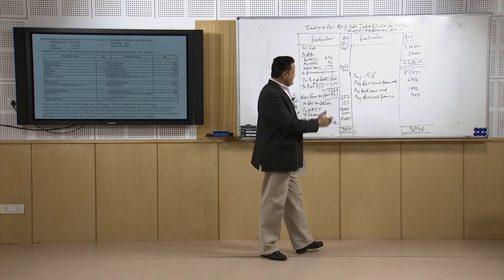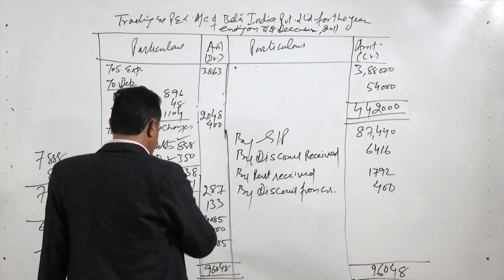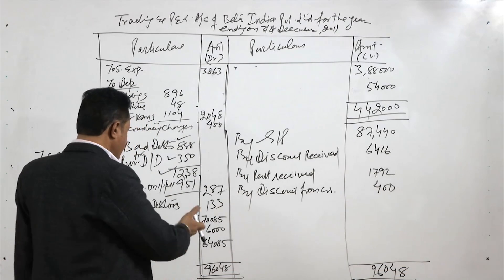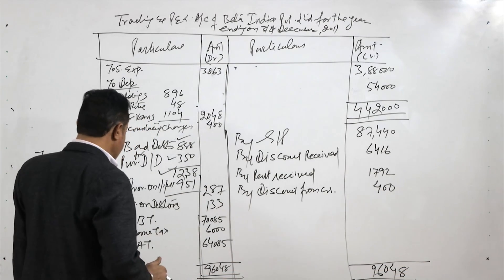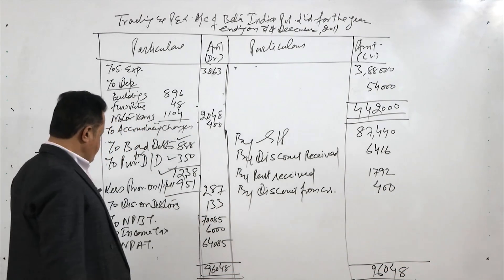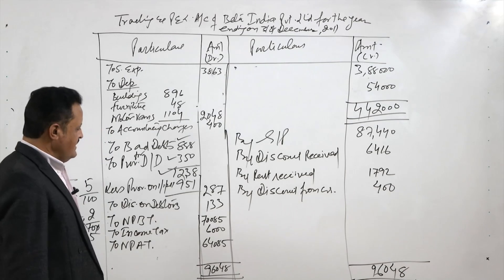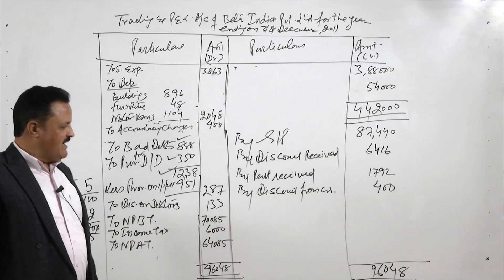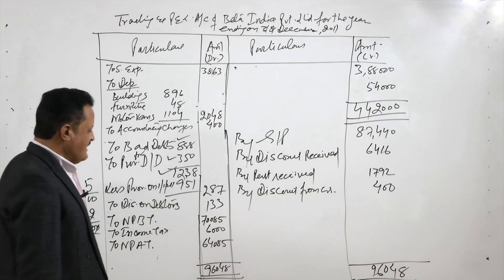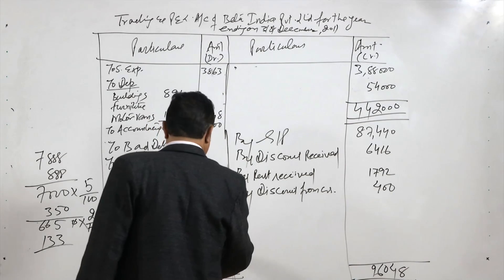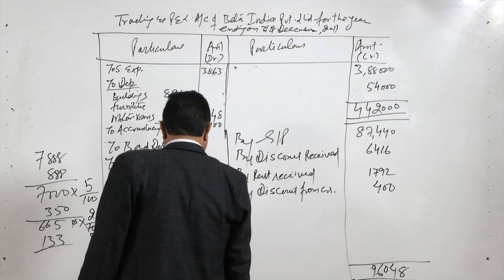This is the income side, this is the expense side, this is the net profit before tax, then income tax, and then net profit after tax of 64,085 rupees which will now be added in the balance sheet.